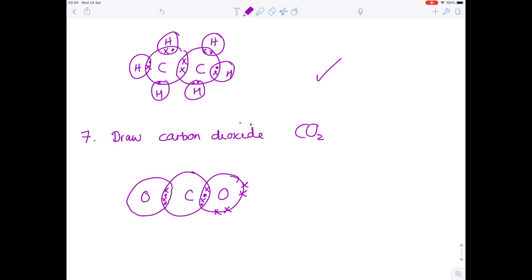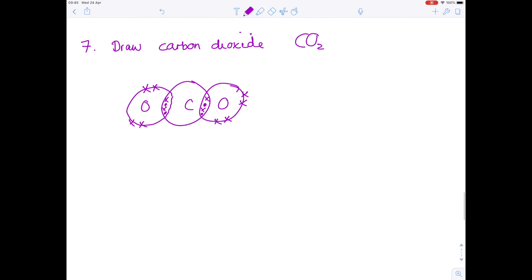So the crosses there represent those six electrons. Let's do the same on this side. And then just double check that oxygen now has eight electrons. Yes, it does. So that's correct.